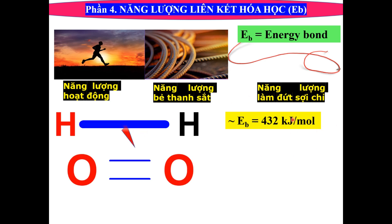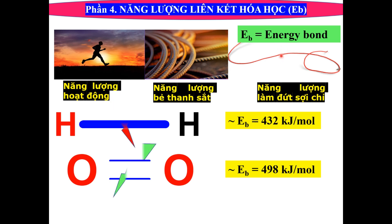Tương tự cho tất cả các phân tử khác, ví dụ như oxygen thì chúng ta thấy cái liên kết đôi này. Chúng ta cần một cái năng lượng đó là 498 kJ trên mol để phá vỡ được cái liên kết đôi này. Giống như sợi chỉ bên trên, chúng ta cắt đứt cái sợi chỉ ra thì chúng ta cần một cái năng lượng nào đó, nó phải dương. Nhớ cái EB là Energy Bond, năng lượng liên kết hóa học là phải dương.